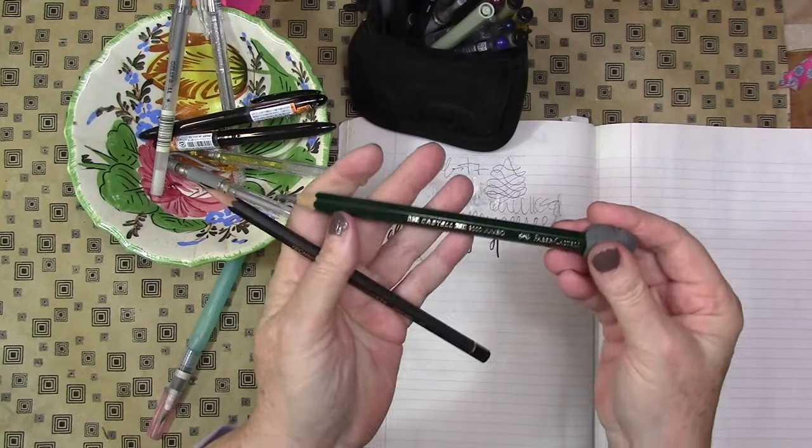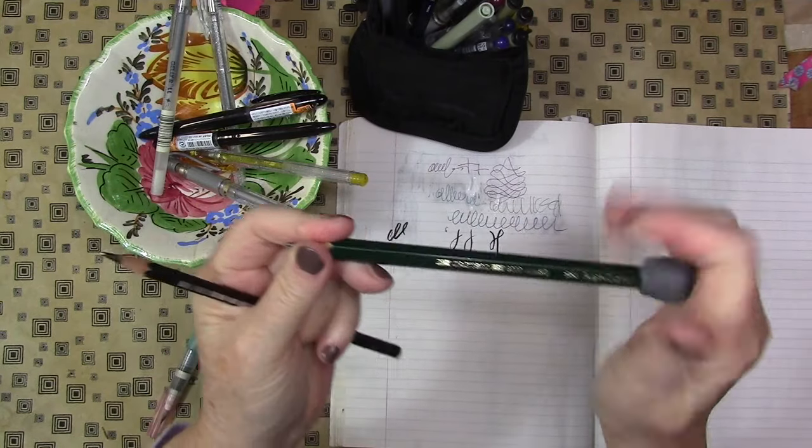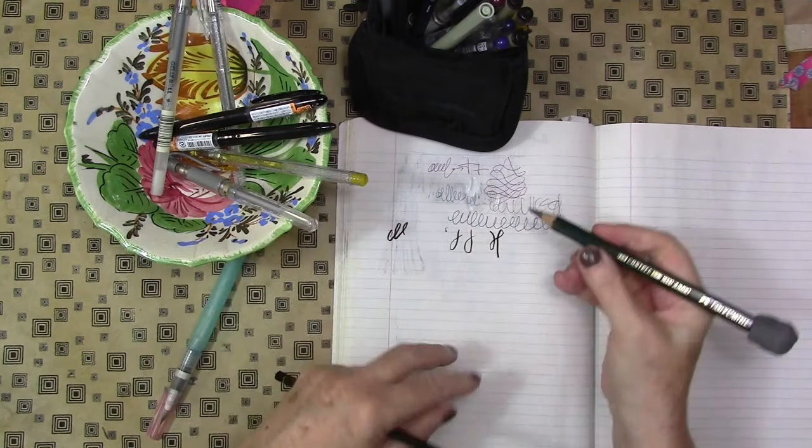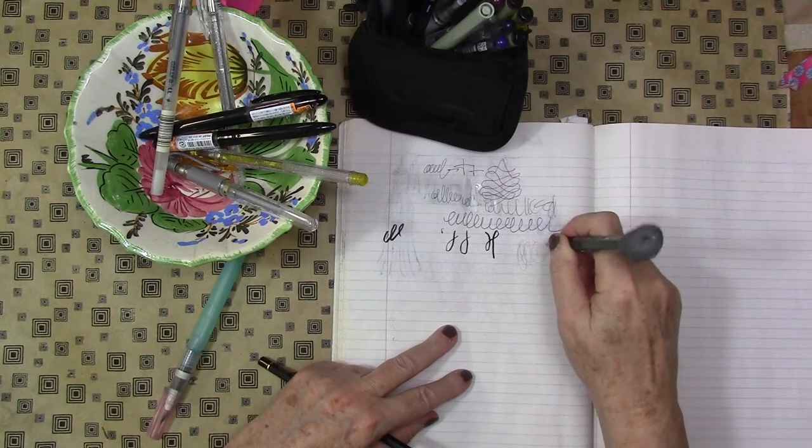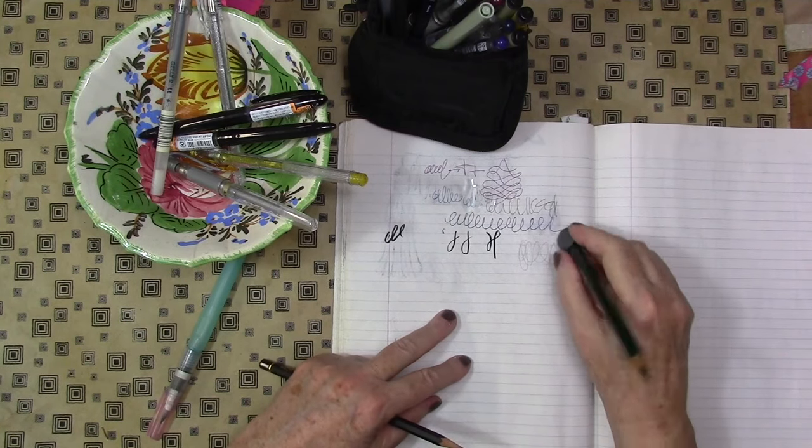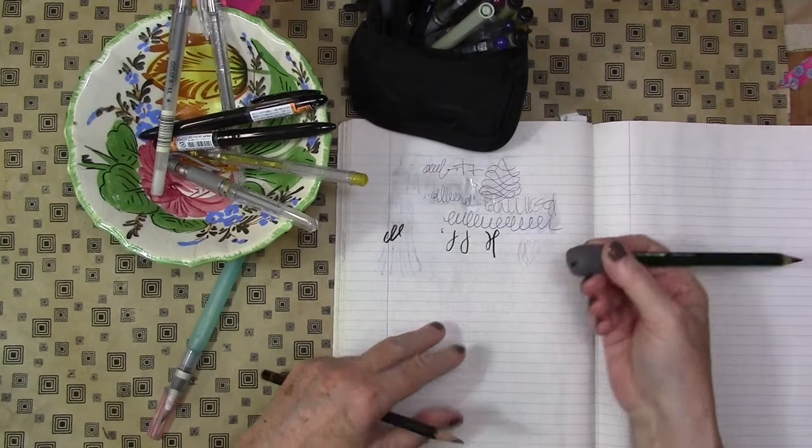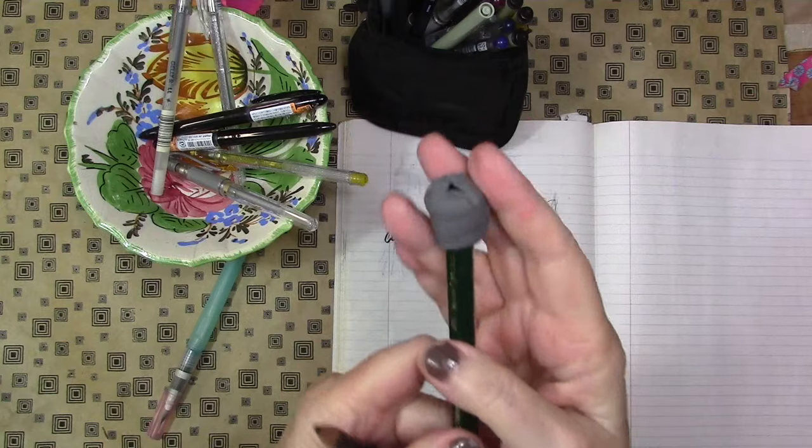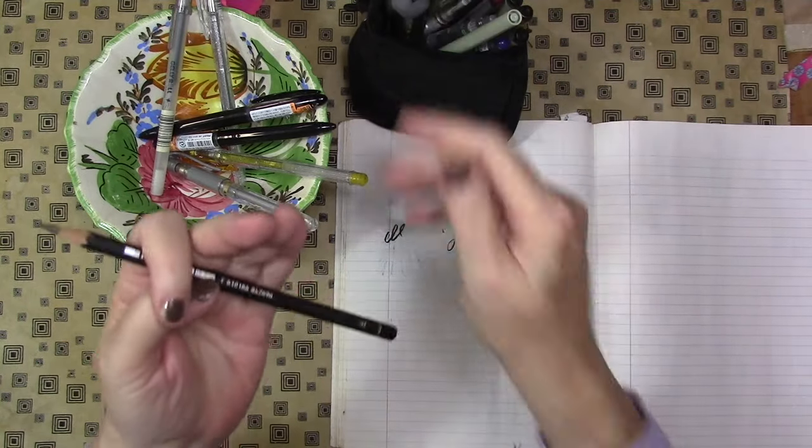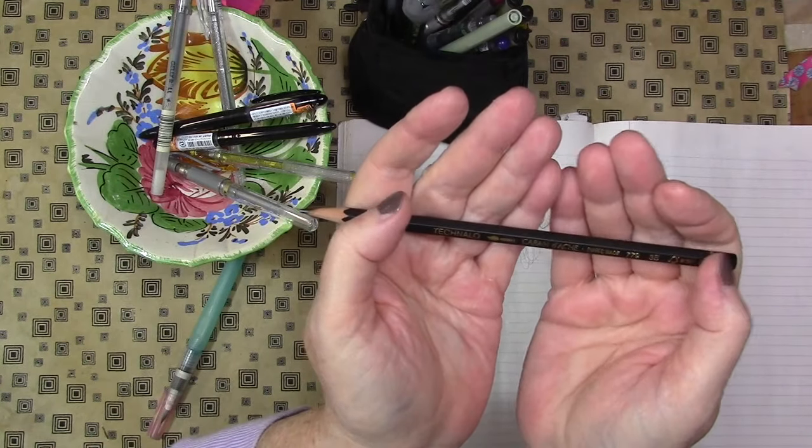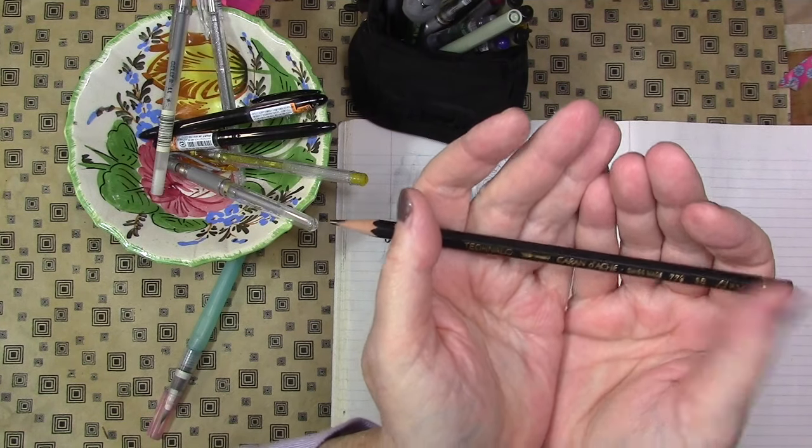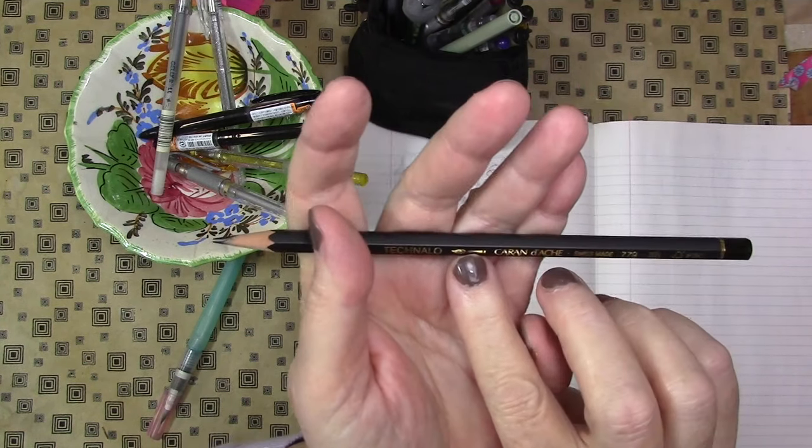Okay, Faber Castell. This is just your regular all-around pencil. This is an HB pencil. I usually like a juicier pencil and I just keep my kneaded eraser on top of it. I can take that off. It's like a little turban to my pencil. And then this pencil, Technolo, Caran d'Ache, water soluble.